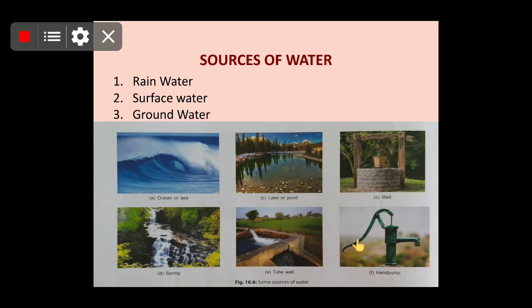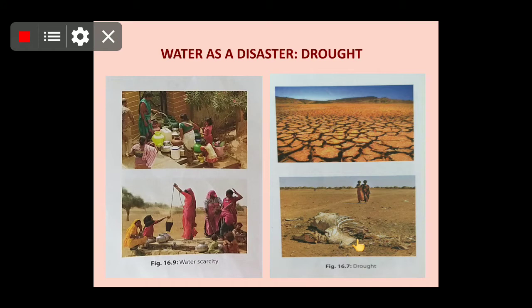These are the three main sources of water from where we get our supply. As the population is increasing at a very rapid rate and modern lifestyle demands a lot of water, the consumption of water has increased very much. We are not using water in a sustainable way, the atmosphere is changing, and the water cycle is being disturbed. So we may face water scarcity — a shortage of water.